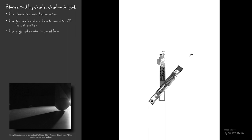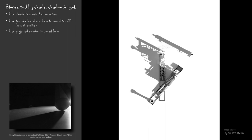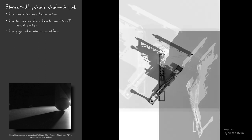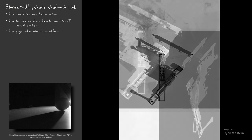This drawing by master student Ryan Western reveals a third way to tell a story through shadow and light. When an object is drawn in plan, its projected shadow can unveil its form, enabling us to see both its plan and elevation simultaneously. Inverted reflections of the projected shadow can then be used to provide atmosphere.